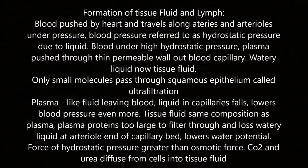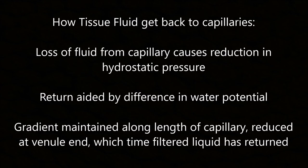The force of hydrostatic pressure is greater than the osmotic force, so CO2 and urea diffuse from cells into the tissue fluid. To return tissue fluid to the capillaries: loss of fluid reduces hydrostatic pressure, and the difference in water potential drives return. The gradient is maintained around the venule end of the capillary, at which point the liquid has returned.